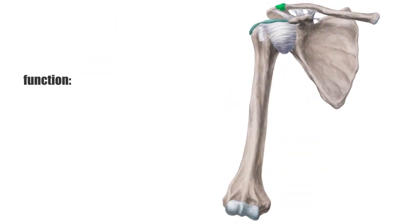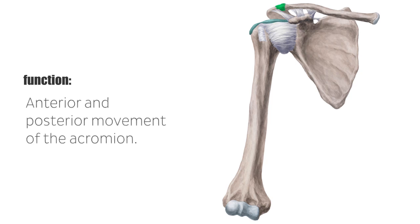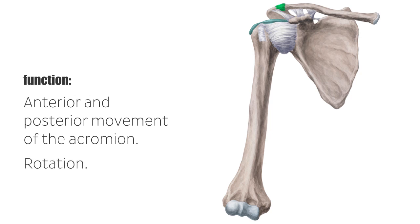This joint functions to allow anterior and posterior movement of the acromion during the protraction and retraction of the scapula, rotation during adduction and abduction of the shoulder, and the tilting of the acromion during adduction and abduction of the arm.